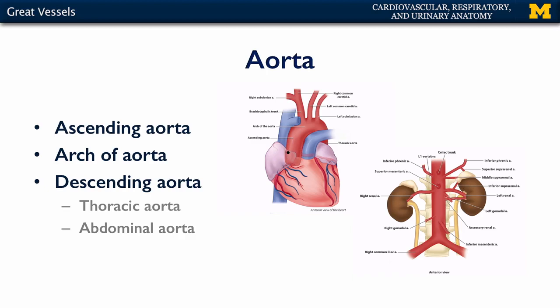There are typically three branches of the arch of the aorta. They are, in order: the brachiocephalic trunk, which then divides into the right subclavian artery and the right common carotid artery; then the left common carotid artery; and finally the left subclavian artery.